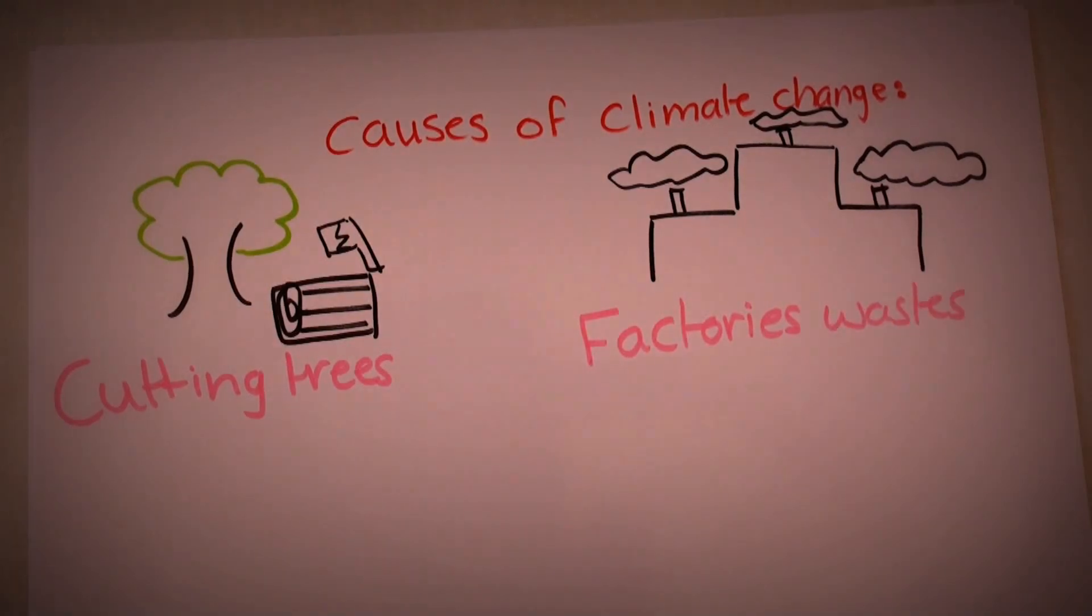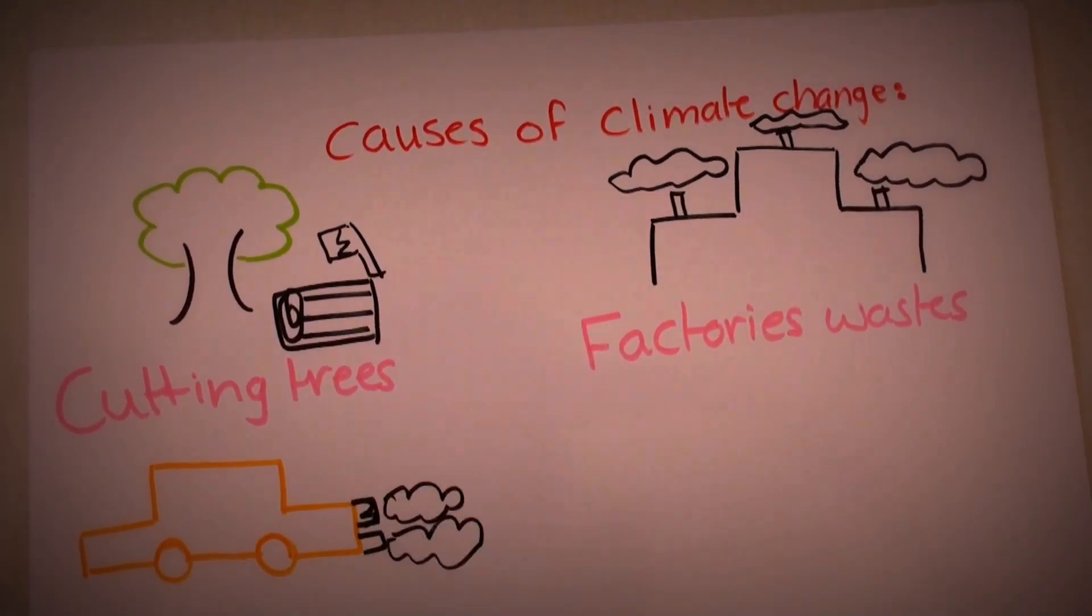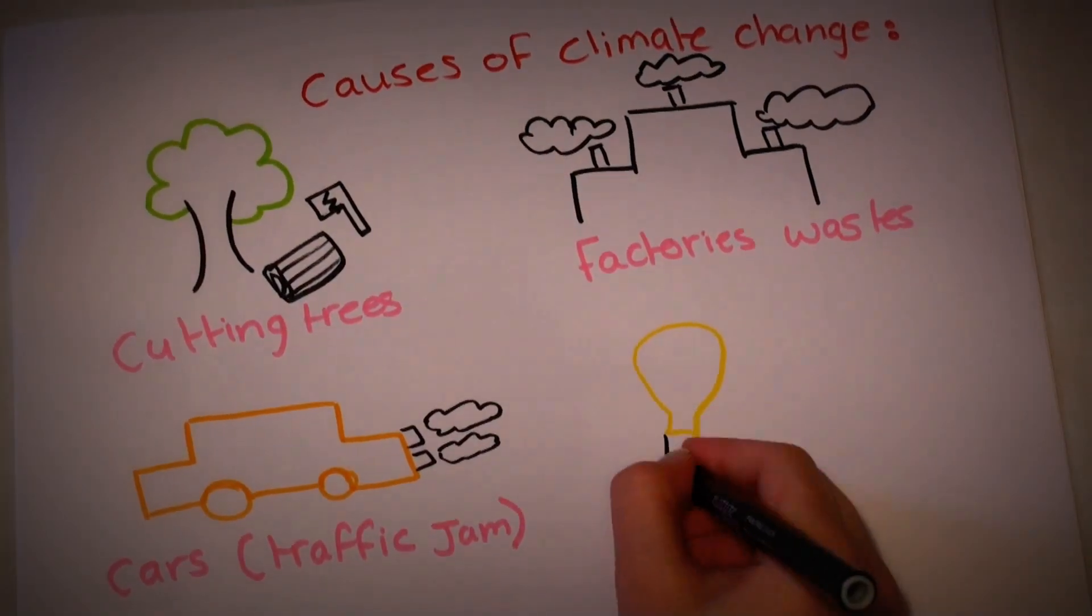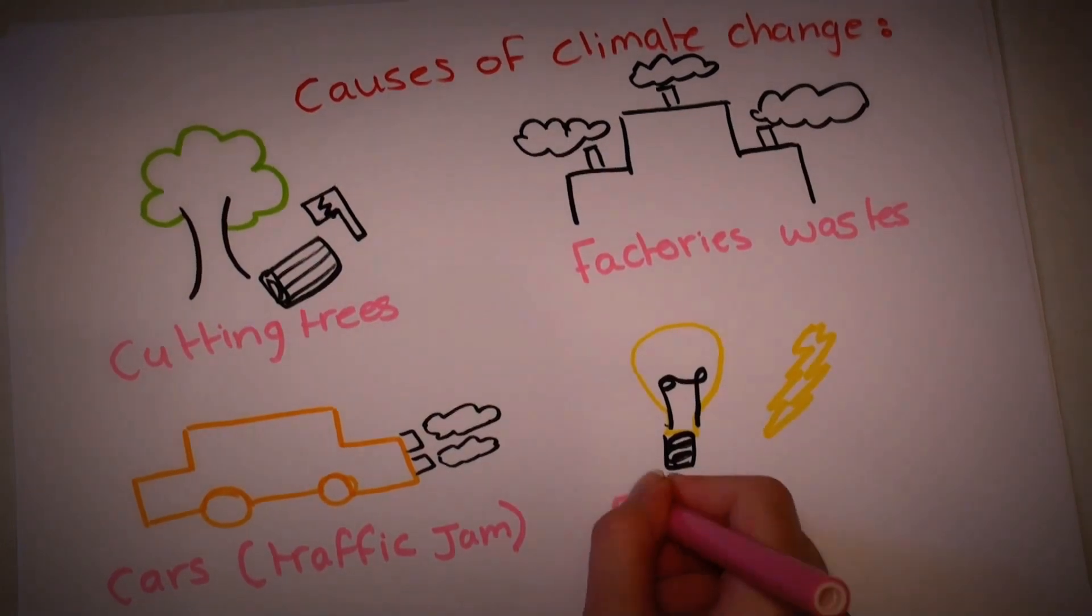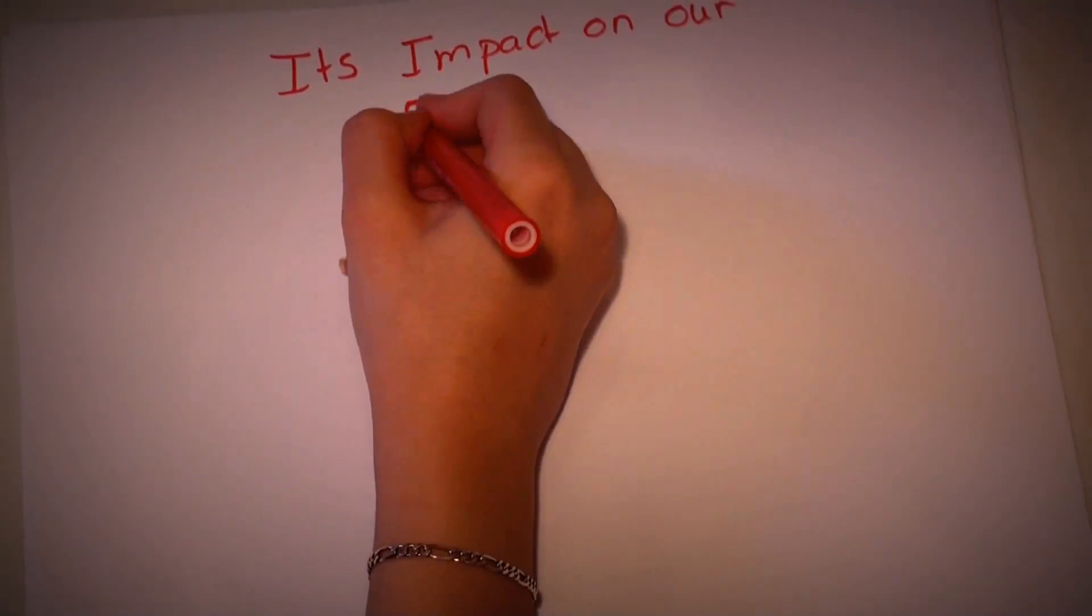Due to that, trees were cut for more architecture, factories were opened, cars were used more often, and electricity was used excessively and in an abusive way.